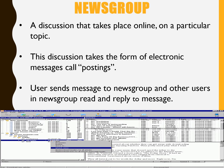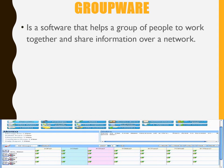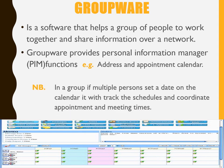Groupware is a communication software that helps a group of people to work together and share information over a network. It provides personal information such as address and appointment calendar. In a group, if multiple persons set a particular date on the calendar, it will track the schedules and coordinate appointments and meeting time.